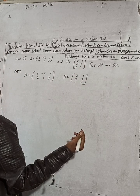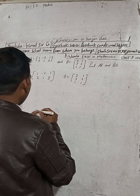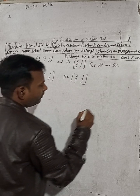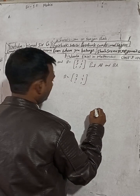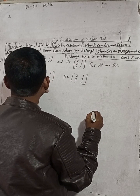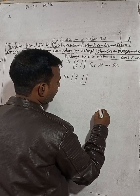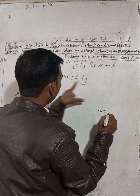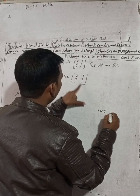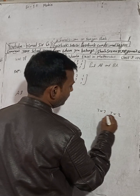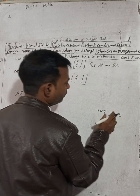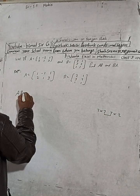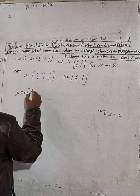For AB, let's check whether the multiplication is possible or not. Matrix A has order 2 rows by 3 columns, and matrix B has order 3 rows by 2 columns. The middle values are equal — both are 3 — so AB is possible.